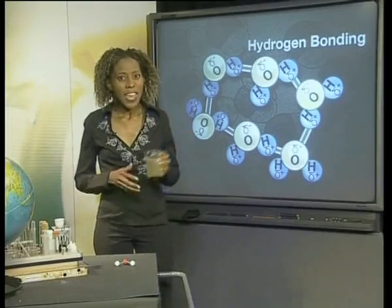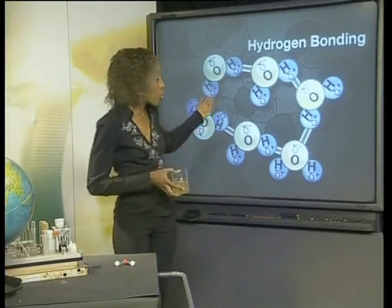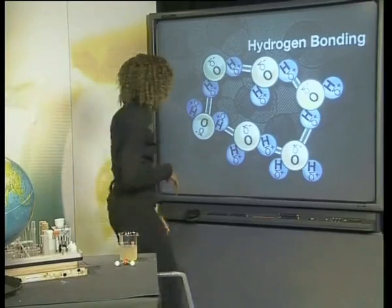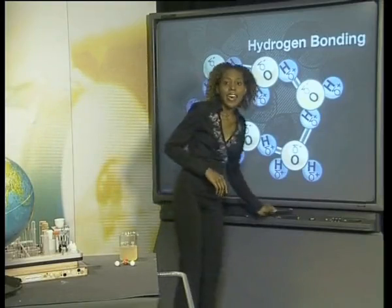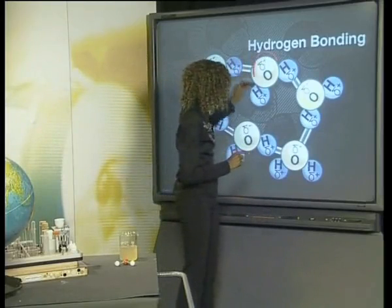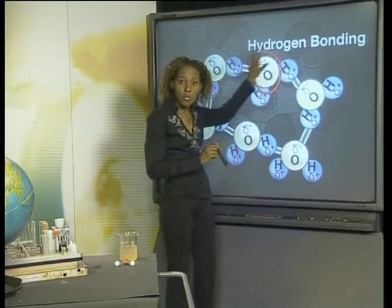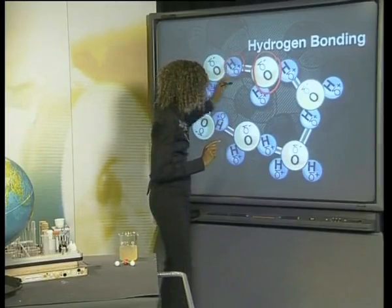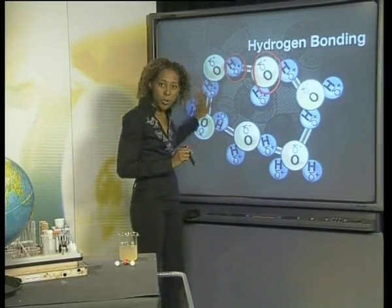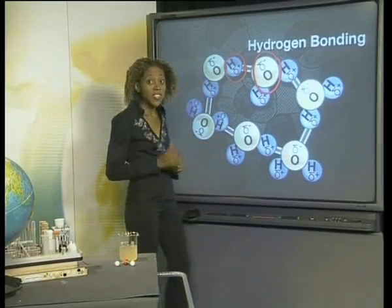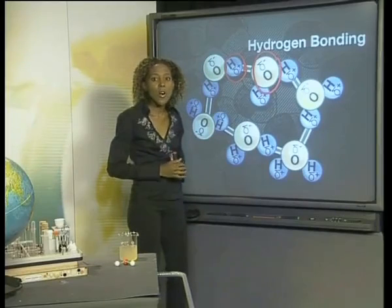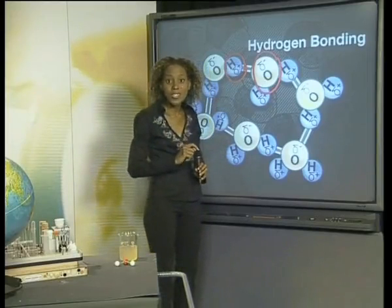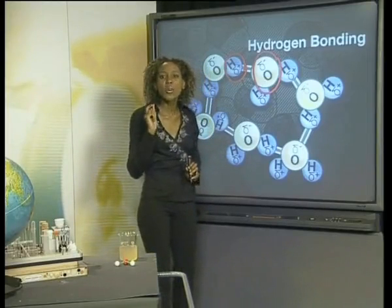This causes the oxygen end to be more negatively charged and the hydrogen side to be more positively charged. Because of this, we call the water molecule a polar molecule. In our glass there are millions of these water molecules. The negative oxygen of this polar molecule is very attracted to the positive hydrogens of other water molecules. This attraction is very strong because of intermolecular forces between water molecules called hydrogen bonding.